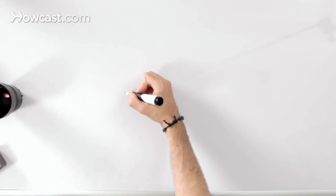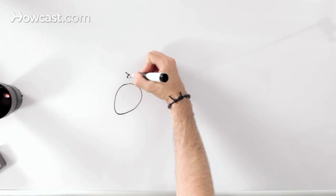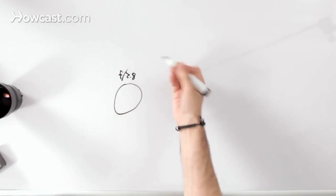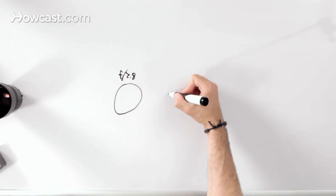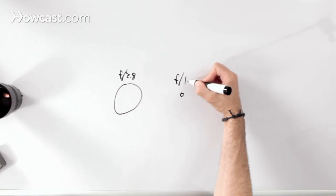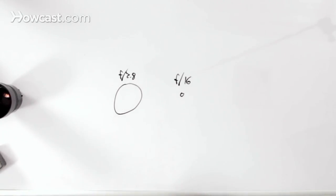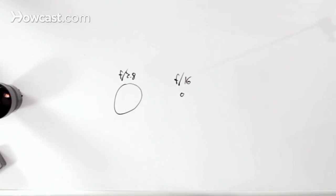This is about the equivalent of an aperture f2.8, which is fairly open. And this is the equivalent of an aperture that's f16. This is that center hole that's letting light through into your sensor. At f2.8, you're going to be able to get a much faster shutter speed than f16, because the amount of light coming in is much higher.